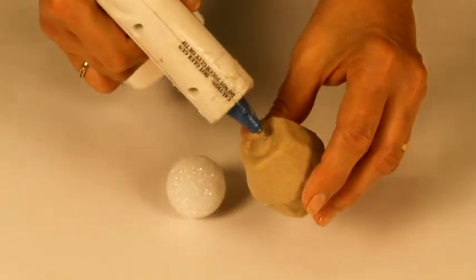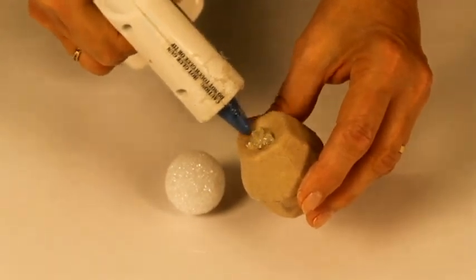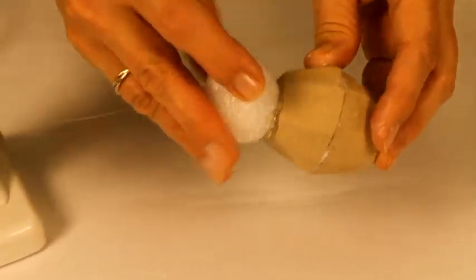Glue a small styrofoam ball on the bottom of one of the cells with a glue gun. The styrofoam ball will represent the head of the spider.